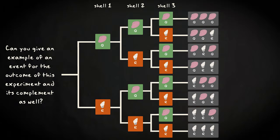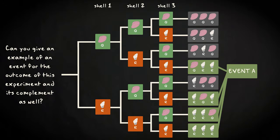Can you also give an example of an event for the outcome of this experiment and its complement? An example of complementary events could be event A, where you would have picked up two or more R shells, versus event B of picking up one or zero R shells in total.